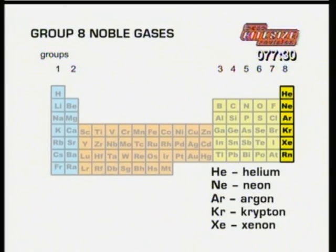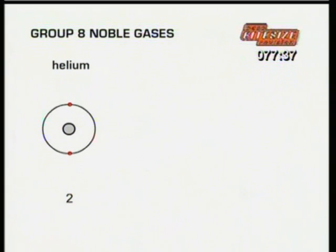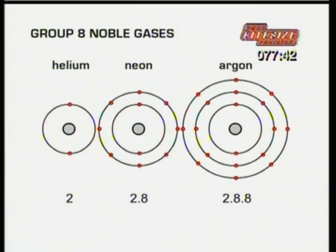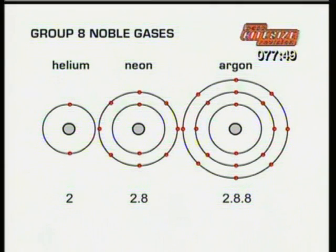By their position in group 8 of the periodic table, we know that each of the noble gases has a full outer shell of electrons. Helium has 2 electrons. Neon has 2 and 8 electrons. Argon has 2, 8 and 8 electrons, and so on. That full outer shell makes them all extremely unreactive. But just like the alkali metals and the halogens, their properties do change as you move down the group.